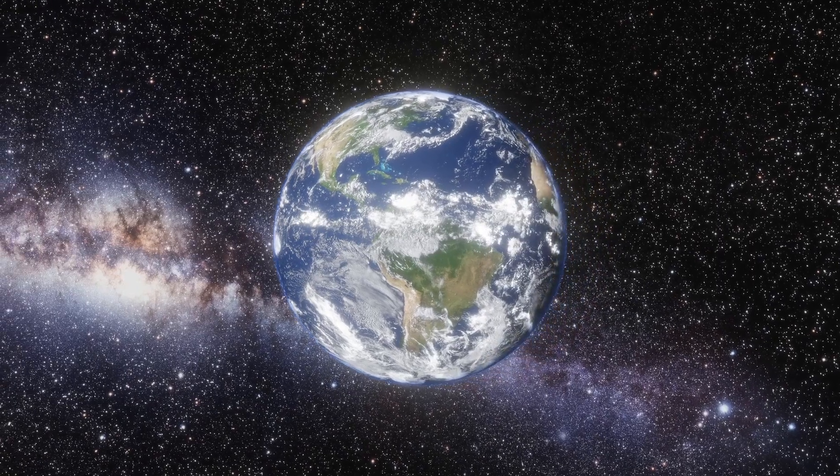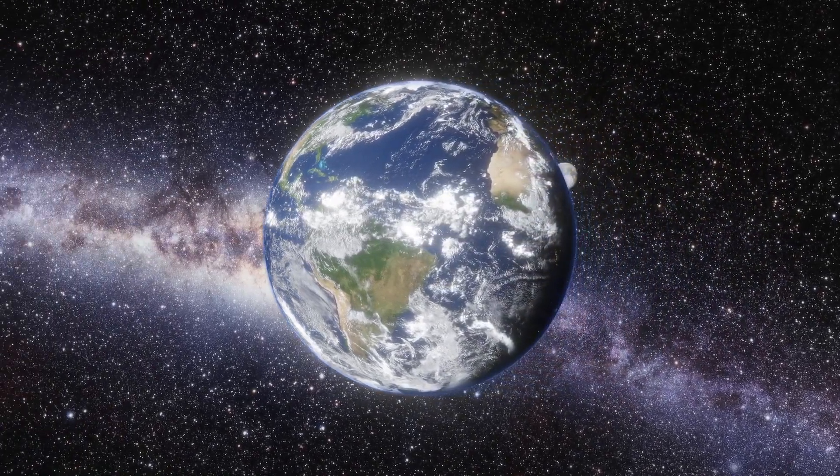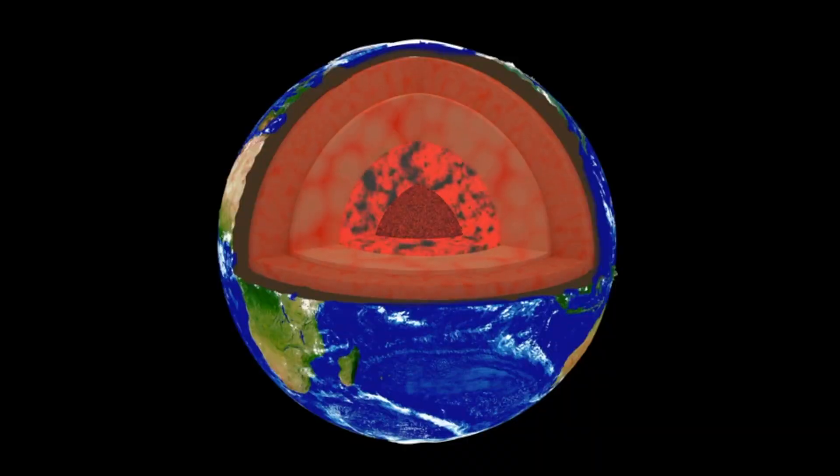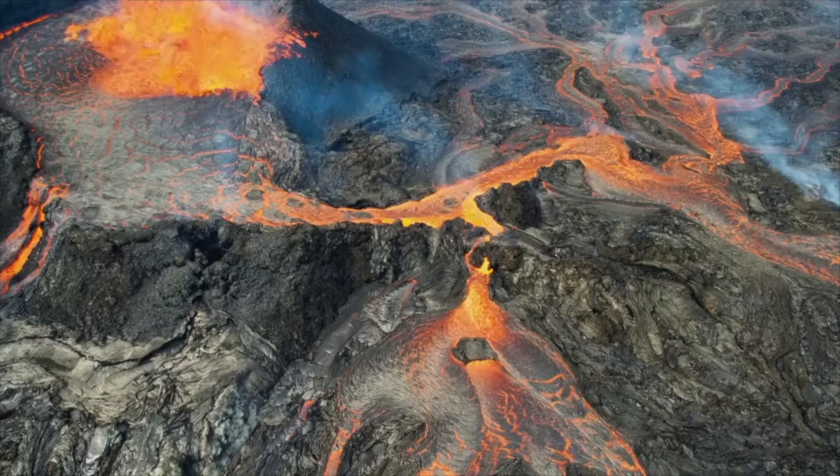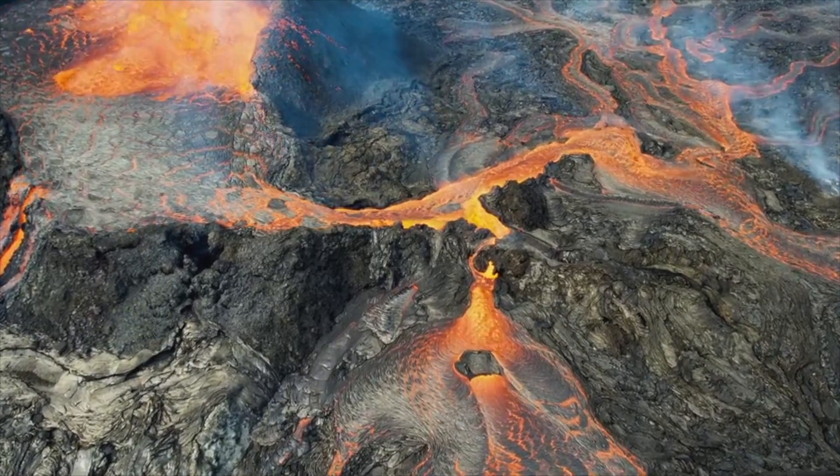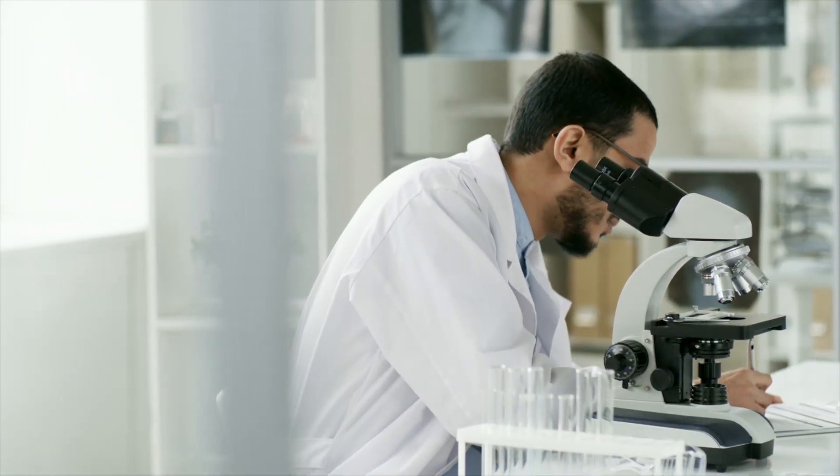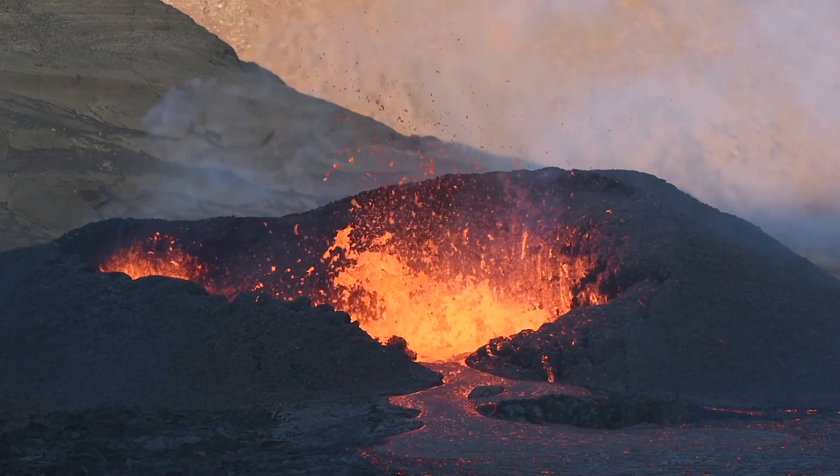If you could cut Earth in half, you would see that it is not just solid rock. Instead, it is made of different layers, some liquid and some solid, some rock and some metal. Inside the Earth is a very hot place. We cannot travel into the Earth to see its layers. Scientists called geologists study clues on the surface to learn about Earth's layers below.